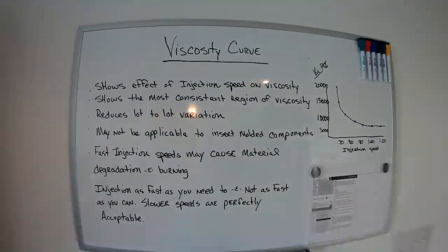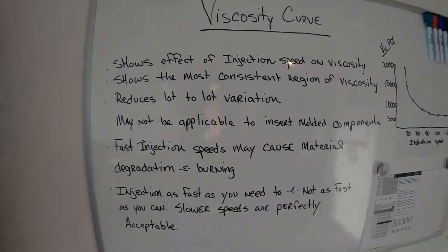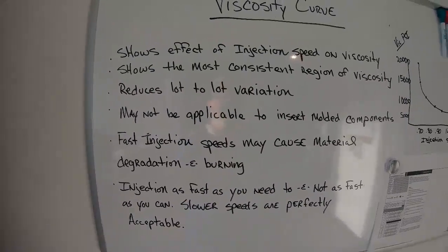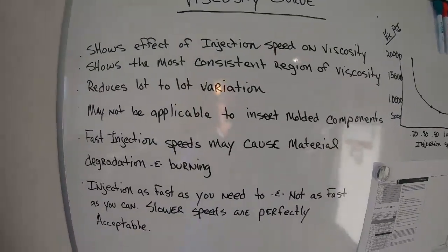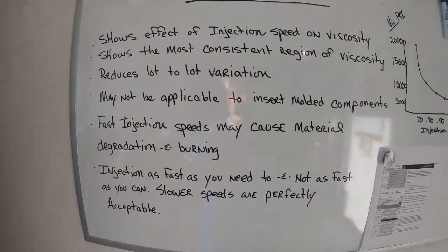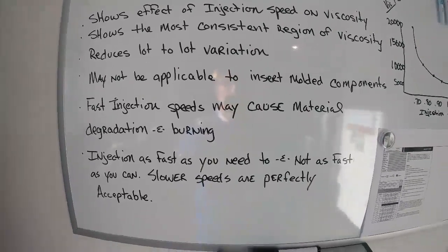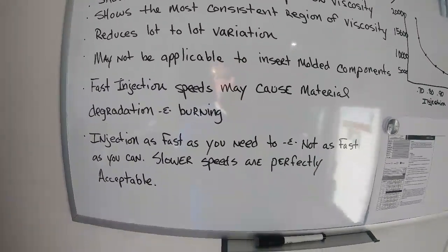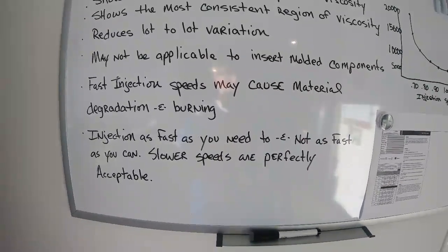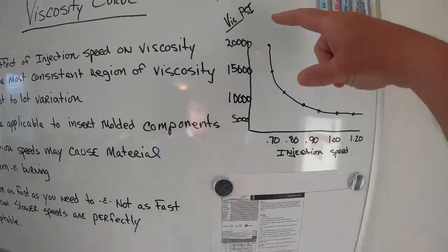On the whiteboard it shows the effects of injection speed on viscosity — showing the most consistent region of viscosity and reduced lot-to-lot variation. It may not be applicable in insert-molded components. Fast injection speed may cause material degradation and burning. The principle is: inject as fast as you need to, not as fast as you can. Slower speeds can be perfectly acceptable.